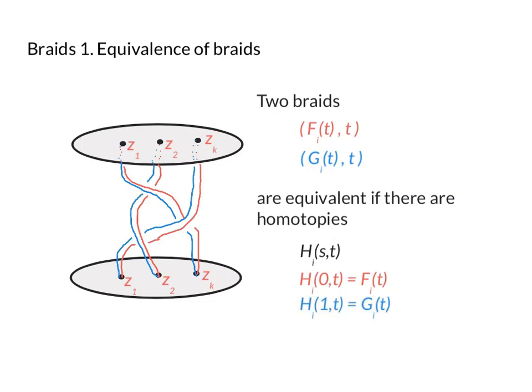And at time one we get the blue braid: H_i(1,t) is g_i(t). So as s goes from zero to one, we interpolate between the braid f_i(t) and g_i(t).